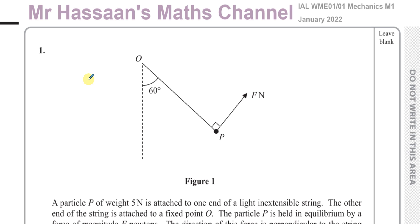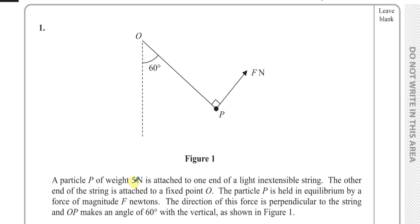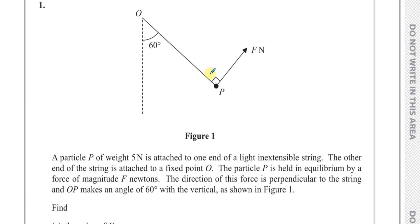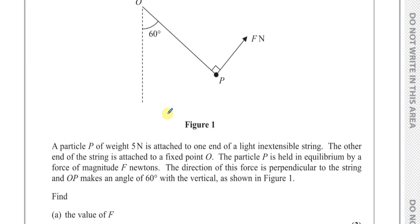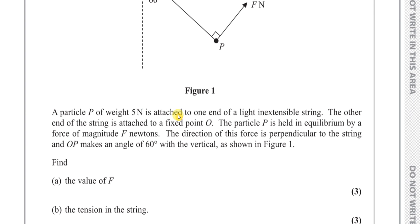Question number one is about statics. It says a particle P of weight 5 newtons is attached to one end of a light inextensible string. The other end of the string is attached to a fixed point O. The particle P is held in equilibrium by a force of magnitude F newtons. The direction of this force is perpendicular to the string, and OP makes an angle of 60 degrees with the vertical. Find the value of F and the tension in the string.